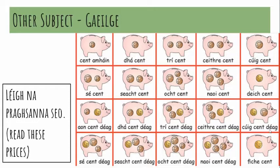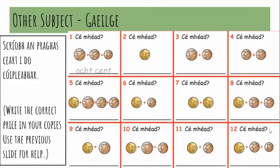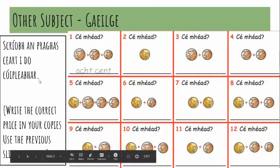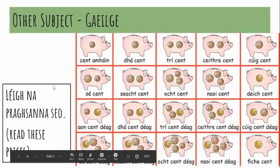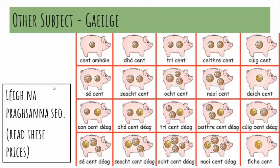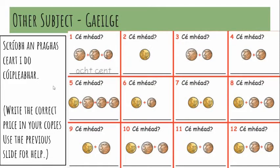Fiche cent — the last one there is twenty, so we have all the way from one up to twenty. What you have to do is use this slide to help you with your activity on the next slide. I put this video on one side and all these slides separately in the PowerPoint and in the Google Slides as well. The activity says: scríobh an praghas ceart — write the correct price in your copy — and you use the previous slide to do it. Use this slide, the one with all the piggy banks and the words written underneath, to answer this one.